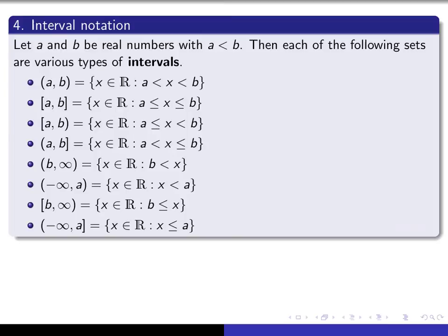Finally, we have what's known as interval notation, which you've seen a lot in calculus. There are eight different ways to describe intervals — bounded intervals and unbounded intervals — each described using set builder notation. An open interval (a, b) is the set of all real numbers x such that x lies strictly between a and b. A closed interval [a, b] includes the endpoints, so x is greater than or equal to a and less than or equal to b. The half-open intervals include one endpoint but not the other, indicated by the corresponding less-than-or-equal-to signs.